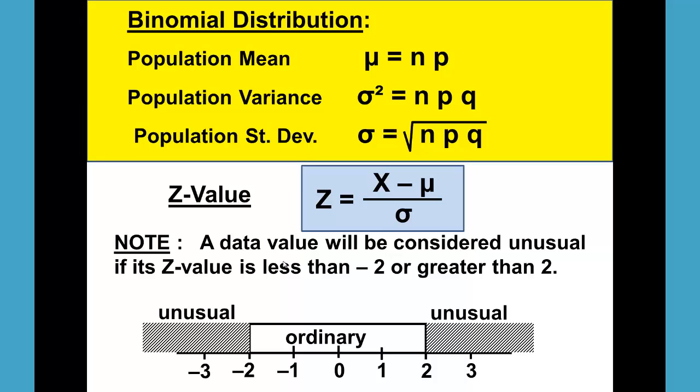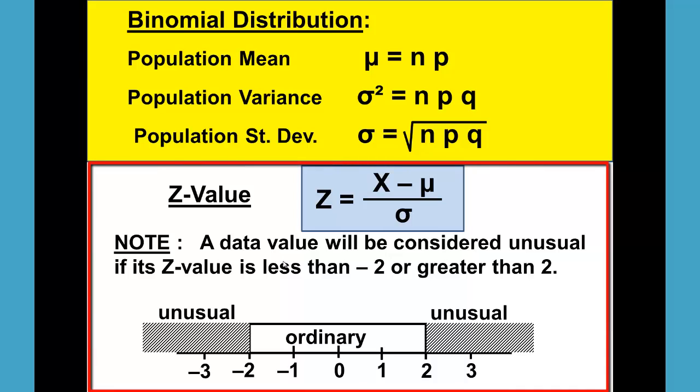Ms. Borlaug uses the z values to calculate ordinary and unusual. So z equals x minus the mean divided by the standard deviation. And note a data value will be considered unusual if its z value is less than negative 2 or greater than positive 2.